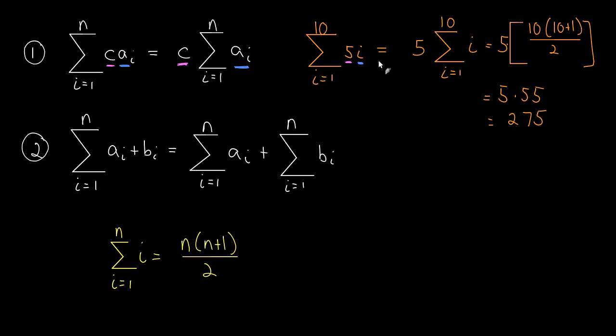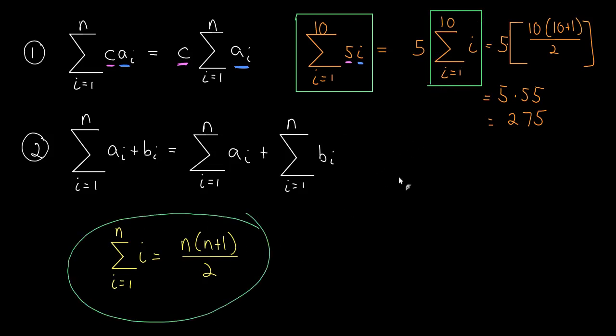What we did was, if you notice, the problem we started with here, we don't actually have an explicit formula for this summation. But what we did was, we pulled the 5 out, we pulled that constant out, and then what we were left with was something with an explicit formula. We had this formula for that sum, and then we just used the formula, plugged 10 in, and simplified those numbers.